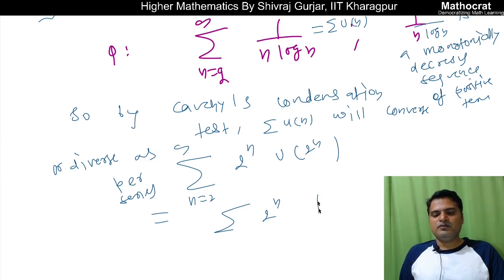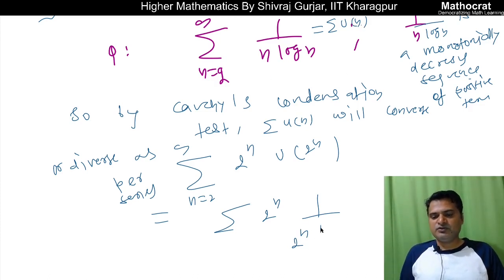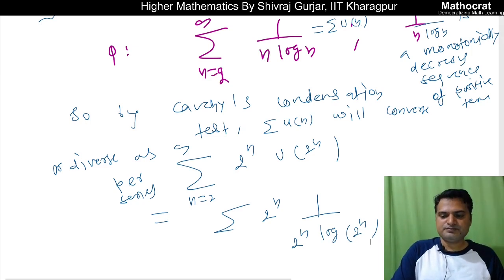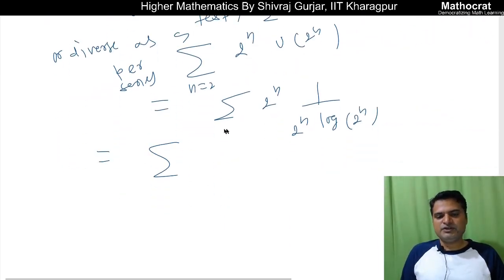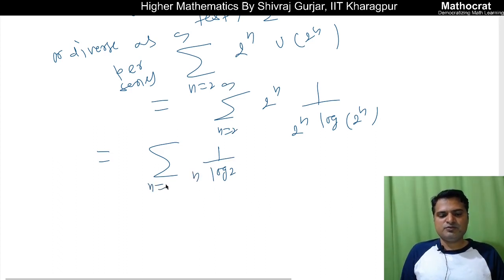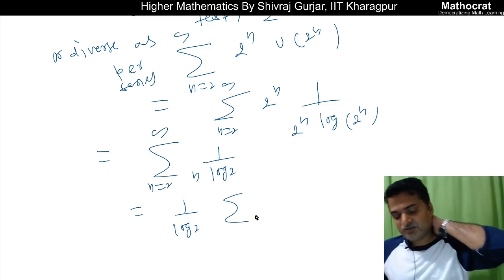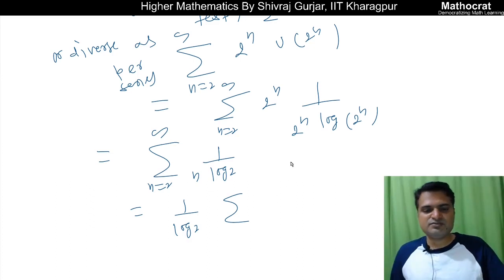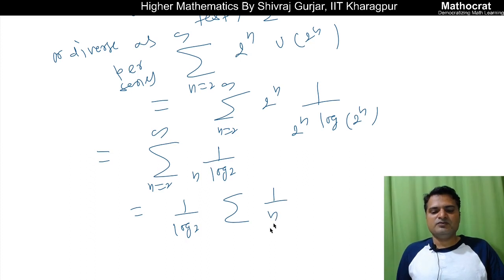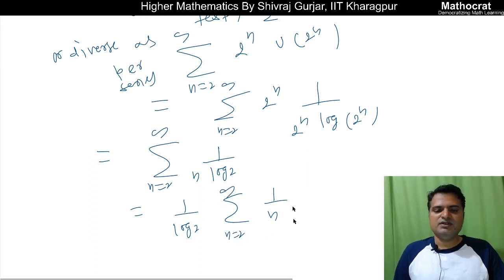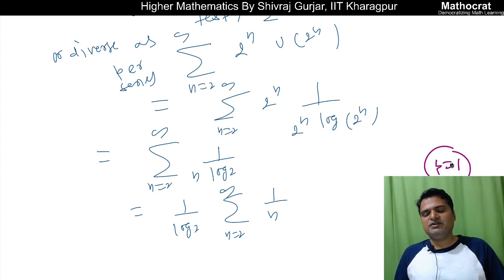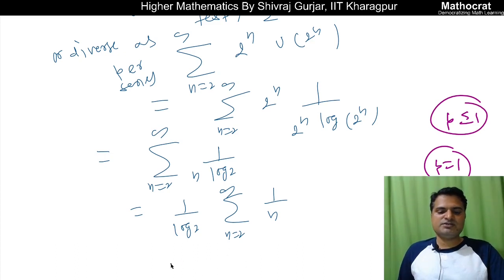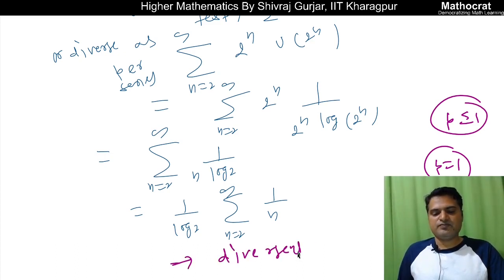I put 2n: n goes to 2n. So 2n cancels, giving us summation from 2 to infinity of 1 upon log 2 to the power n. Since 1 by log 2 is a constant, this reduces to 1 by n, n from 2 to infinity — which is the harmonic series. By the p-test, since p equals 1, and if p is less than or equal to 1 the series diverges, this series is divergent.